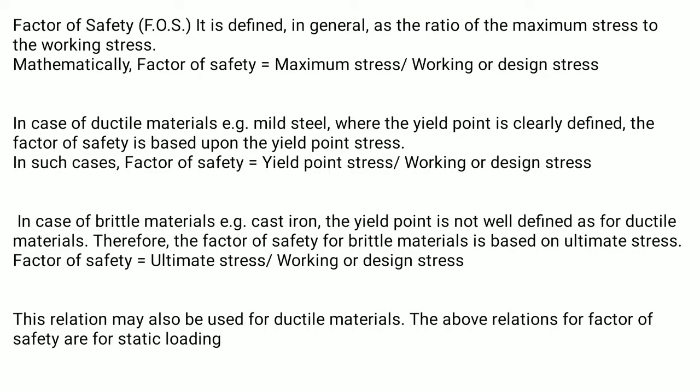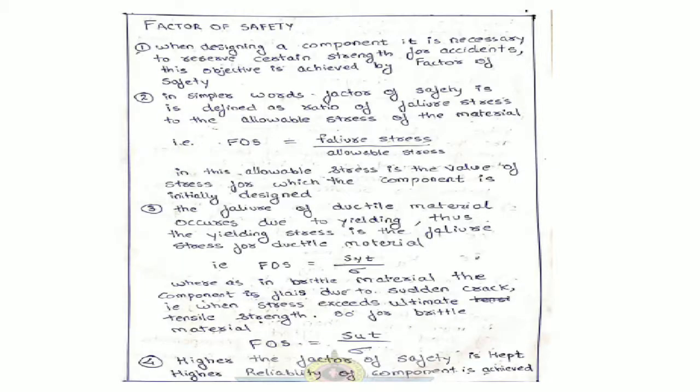Factor of safety can also be defined as the ratio of failure stress to the allowable stress. When this term is applied under accidental conditions for designing a component, failure stress is very important. The component is initially designed by considering failure stress. As discussed, the factor of safety formula differs for ductile and brittle materials.